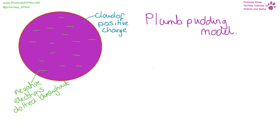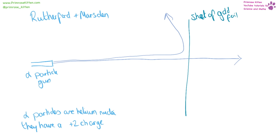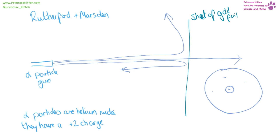We haven't always known that an atom had a nucleus and electrons orbiting around the outside. We used to have a plum pudding model, where we had a large cloud of positive charge with negative electrons dotted throughout — a bit like a Christmas pudding. Rutherford and Marsden did an experiment to test this model. They fired positively charged alpha particles at a sheet of very thin gold foil. The majority went straight through, some were deflected a little, and some were deflected a massive amount. This suggested a small positive centre — the nucleus — surrounded by a large negative region, leading to the development by Bohr of the nuclear model we use today.